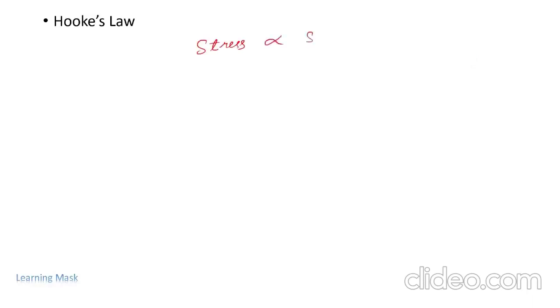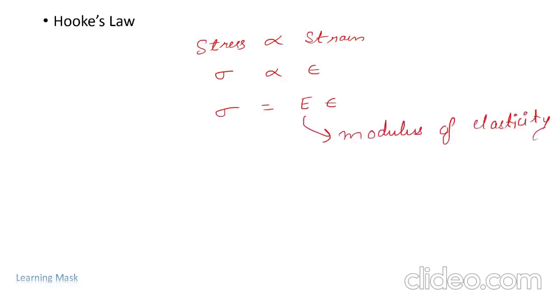Hooke's law states that stress is directly proportional to strain up to the elastic limit. We write it mathematically as stress equals E times strain, where E is the modulus of elasticity. So we can write E as the ratio of stress to strain.